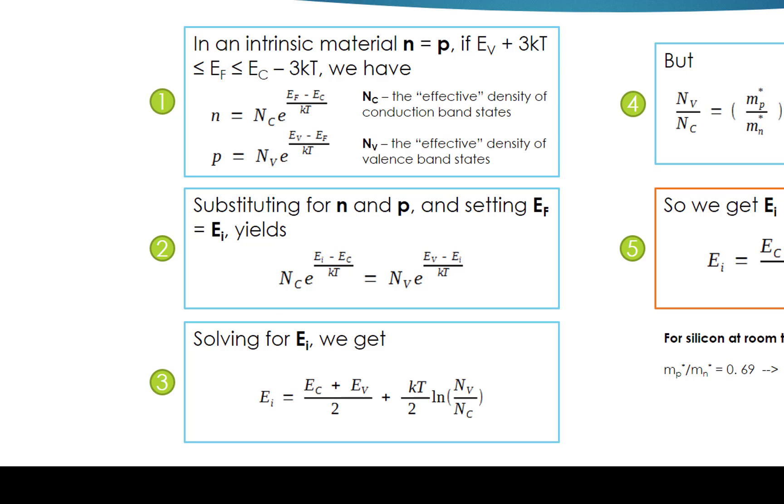Then we can solve the equation for EI and get the result. EI equals (EC plus EV) divided by 2 plus (KT divided by 2) times ln(Nv over Nc).